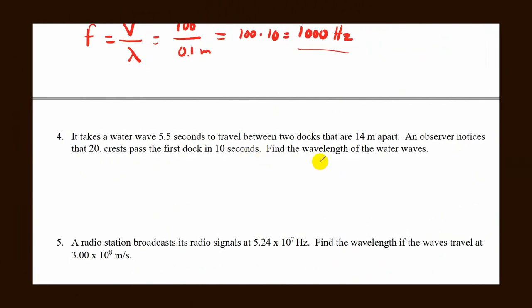Number 4, finding wavelength. When you are given some odd variables, what we need to find is velocity. We don't know that, and we need to have frequency. So we can look at the information that is given: 5.5 seconds between two waves that are 14 meters apart.